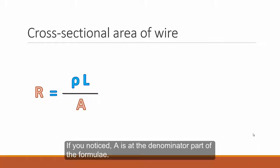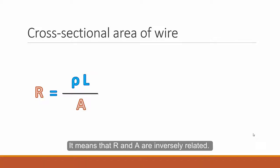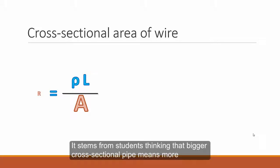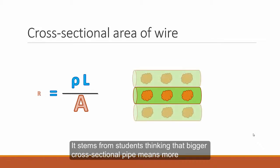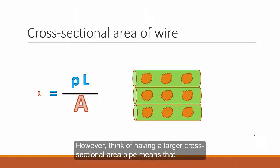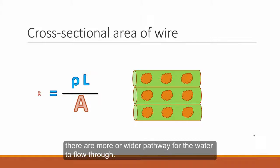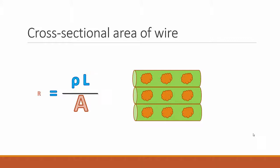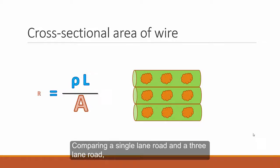For cross sectional area of wire, if you notice, A is the denominator part of the formula. It means that R and A are inversely related. So when A is smaller, R becomes bigger. Or when A is bigger, R will become smaller. A common misconception is when A is bigger, R is also bigger. This stems from students thinking that bigger cross sectional path has more obstructions. However, think of having a larger cross sectional area pipe means that there are more or wider pathways for the water to flow through. So overall, there is more water flowing through, and overall resistance of the combined pipes is actually lowered. Comparing a single lane road and a three lane road, which road do you think you expect to have a smoother traffic? Think about it.